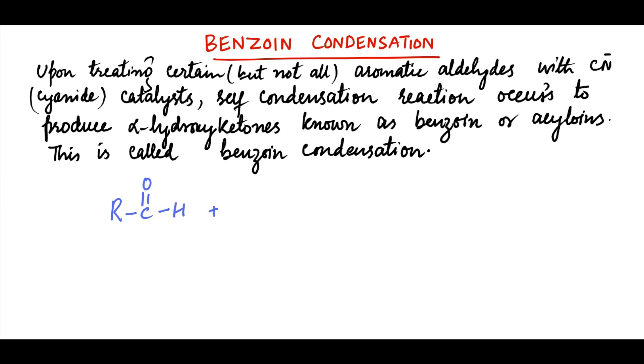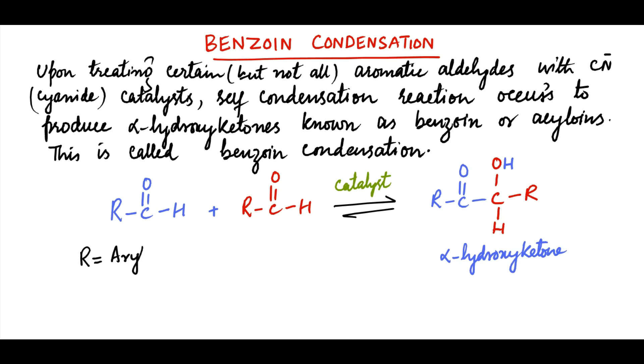For example, consider the reaction between these aromatic aldehydes in the presence of cyanide catalyst to produce the product alpha-hydroxyketone. The group R can be aryl, heteroaryl, or tertiary alkyl. The cyanide catalyst can be in the form of sodium cyanide with ethanol and water, or potassium cyanide with ethanol and water.